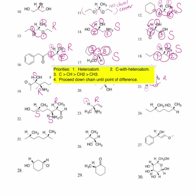Number twenty-four: H is our number four. Working on the first asymmetric center — we have a CH2, a CH3, and another CH2 on one side, then walking down the other chain: CH3 and then a CH2. That CH2 is the atom of difference and has a greater priority than the CH3. The right side of the molecule is number one, the left side is number two, and the methyl group is number three. That rotates clockwise, so this asymmetric center is an R.